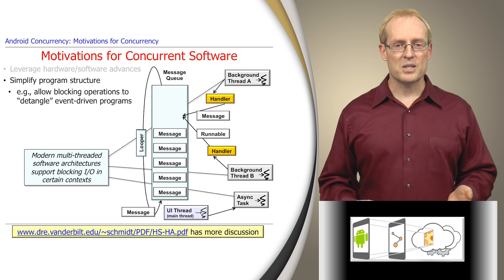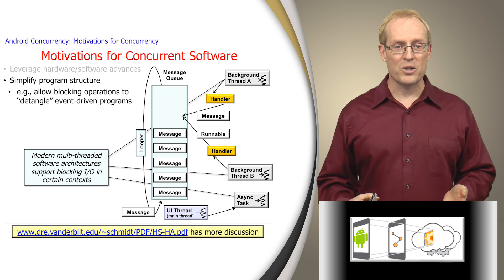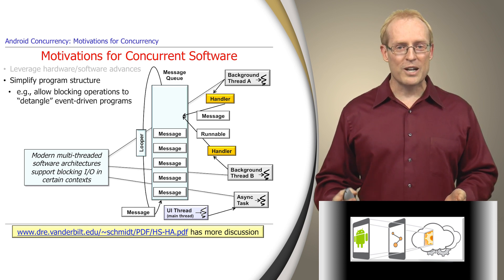The link at the bottom of this slide describes the pros and cons of an architecture pattern called half-sync/half-async that's used by many concurrency frameworks, including Android, as we'll cover later in this section.